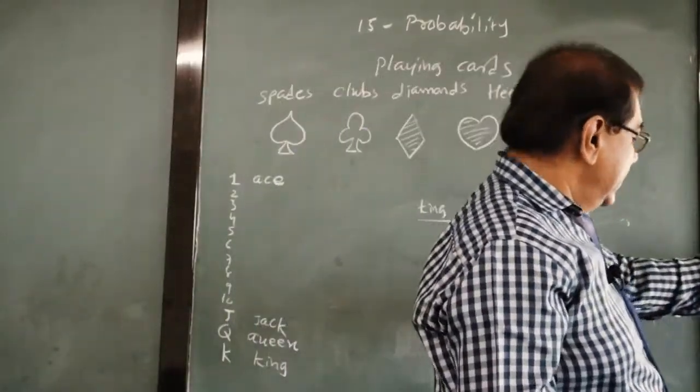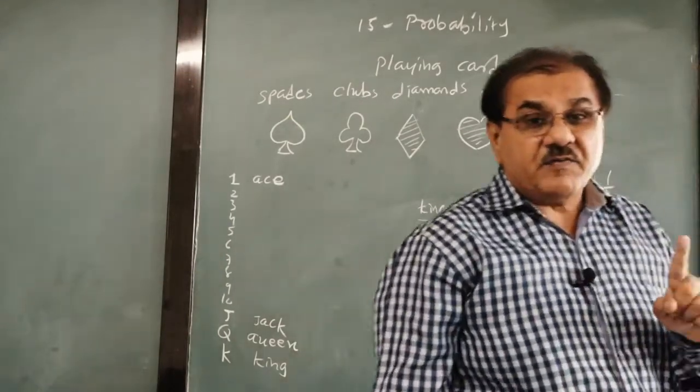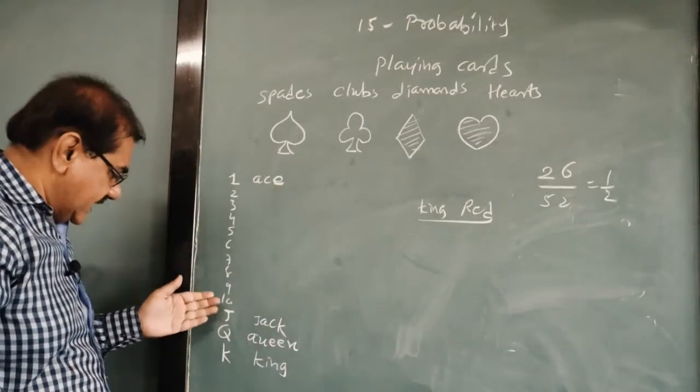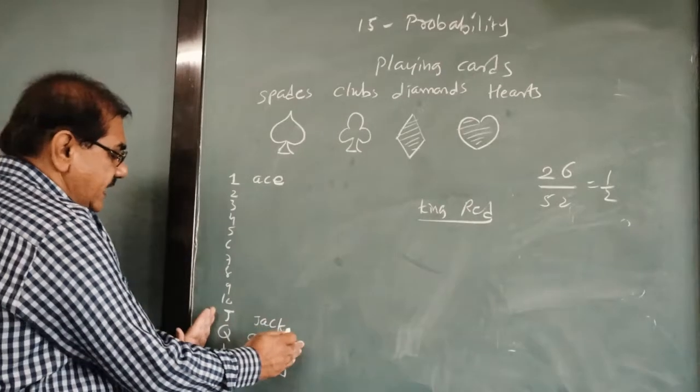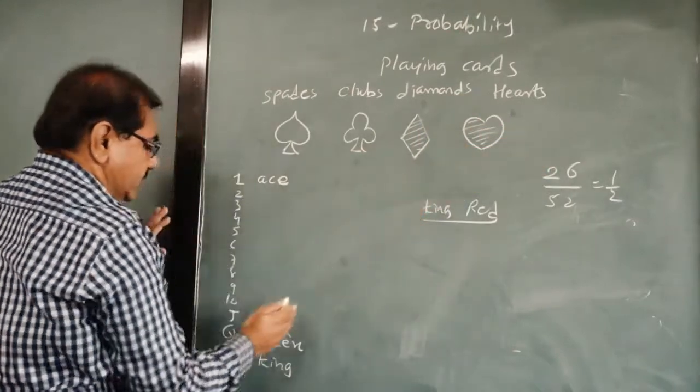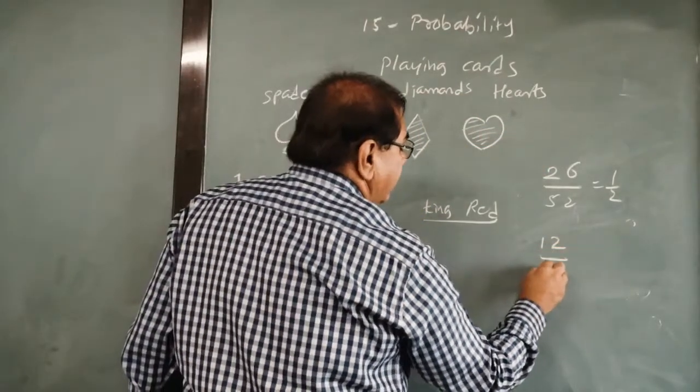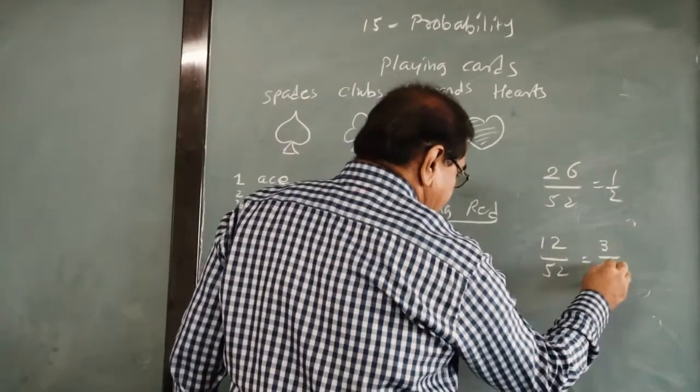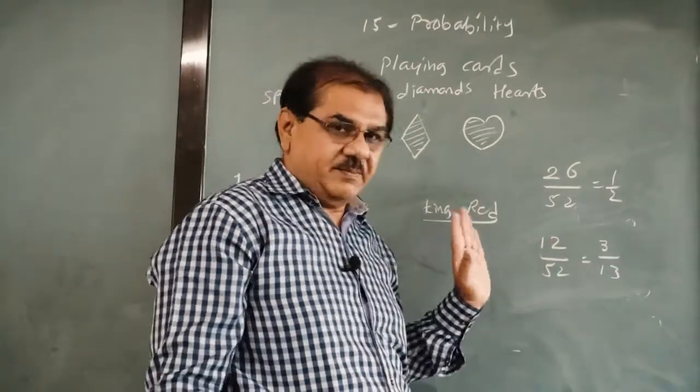Next question. What will be the probability that picked up card is a face card? Face card means gulam, begambar, sajjek, queen and king. They are face cards. So 3 face cards in spade, in the same way 3 in each. So 3 times 4, 12. There are 12 face cards out of 52. So the probability is 3 upon 13.